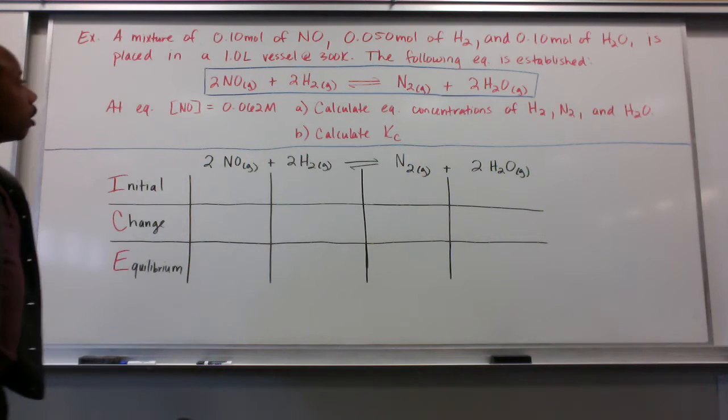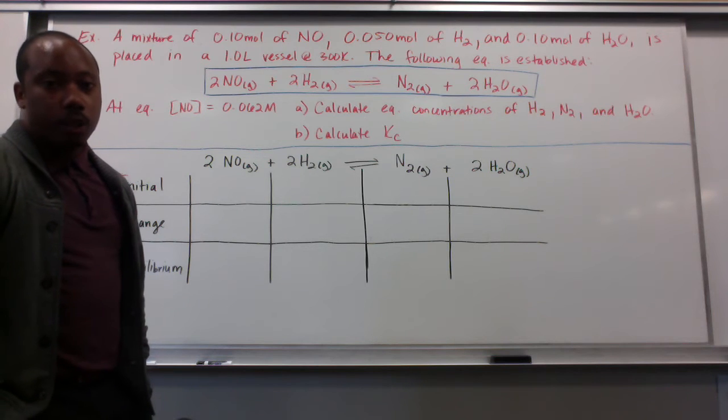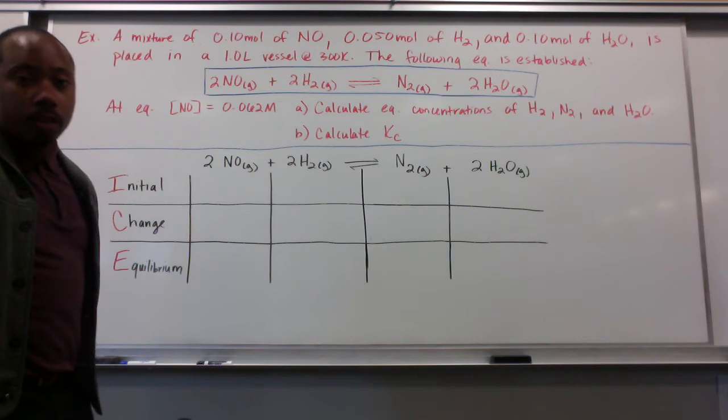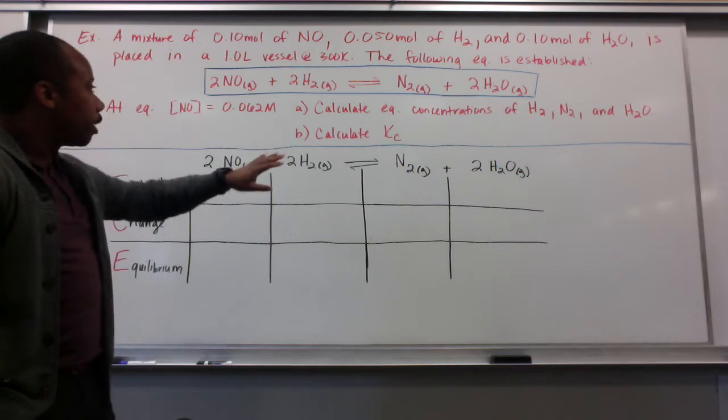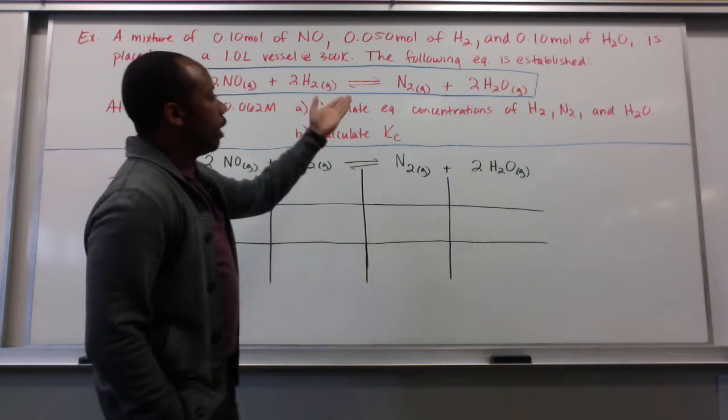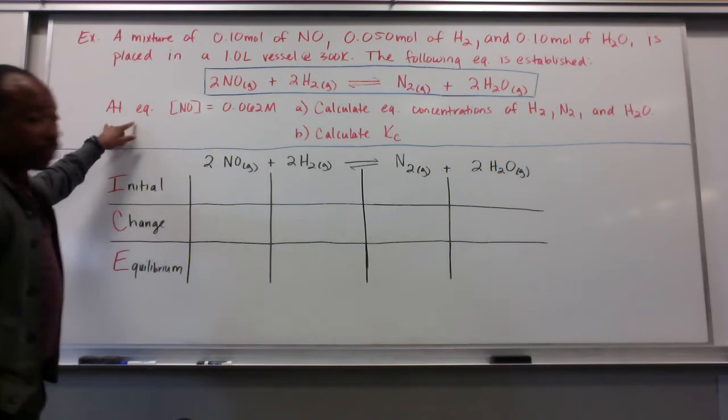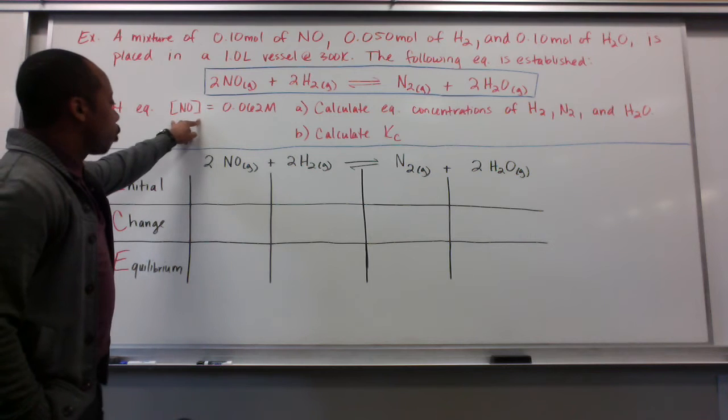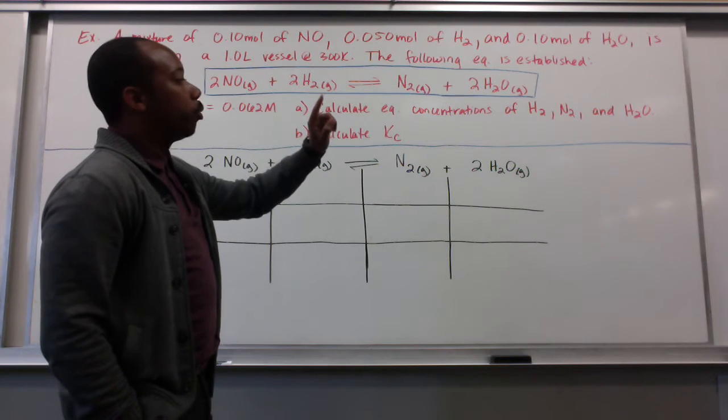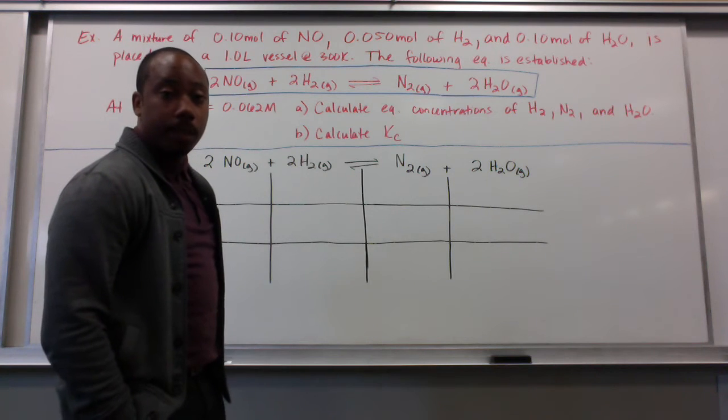A mixture of 0.10 moles of NO, 0.050 moles of H2, and 0.10 moles of H2O is placed in a 1.0 liter vessel at 300 Kelvin. The following equilibrium is established: 2NO + 2H2 ⇌ N2 + 2H2O. At equilibrium, the concentration is equal to 0.062 molar. If that's the case, calculate the equilibrium concentrations of N2, H2, and H2O at equilibrium. And second, calculate your Kc value.